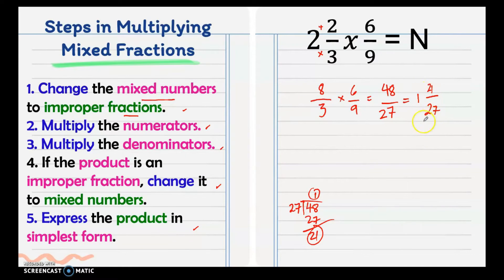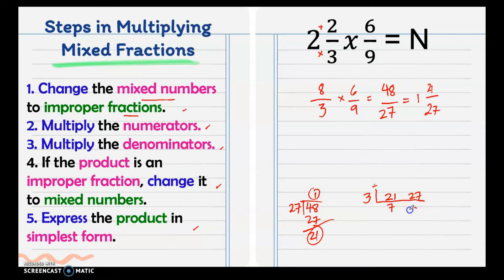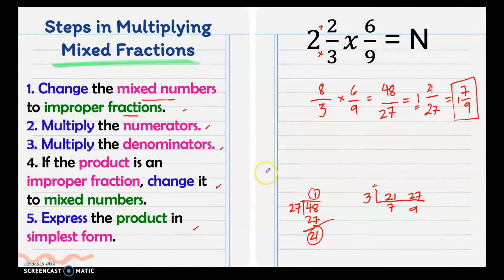Then express the product in simplest form. 21 and 27 can be reduced to lowest terms using the continuous division method. Their common factor is 3, so 21 divided by 3 is 7, and 27 divided by 3 is 9. There's no common factor for 7 and 9 aside from 1, so our answer is 7/9 — and don't forget the whole number, which is 1. So our final answer is 1 and 7/9.